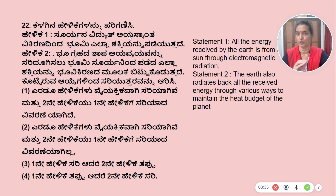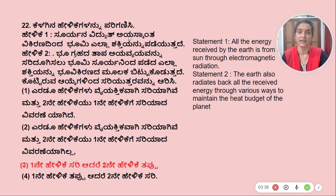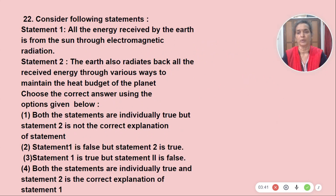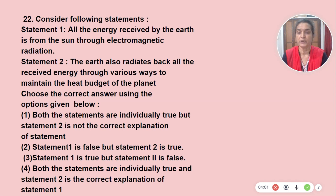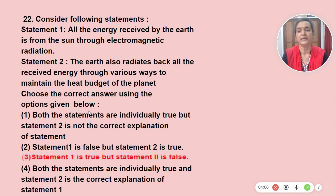This statement is correct. Both statements are individually true but statement 2 is not the correct explanation of statement 1. Statement 1 is false but statement 2 is true. Statement 1 is true but statement 2 is false. Both statements are individually true and statement 2 is the correct explanation of statement 1.